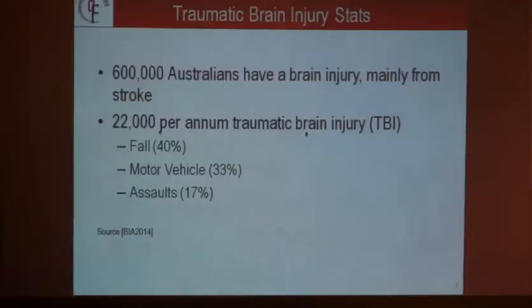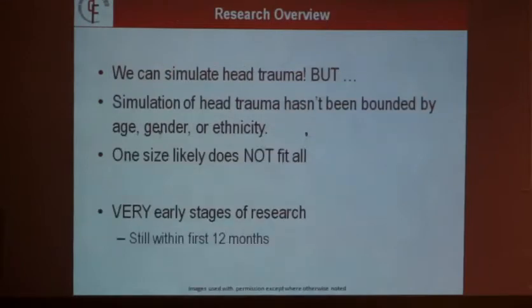My research is really around head injuries. There are 600,000 people in Australia suffering from some sort of brain injury. 22,000 of those are annually from traumatic brain injuries from accidents and falls, so it's definitely an area that we need to be paying more attention to. We already can simulate head traumas but the big problem is we don't understand the bounds of the problem — they'll quite often just look at one subject. My research is around expanding what's already been done to the entire population, looking at age, gender, and ethnicity. I'm still in the very early stages of my PhD so a lot of this is forward-looking.